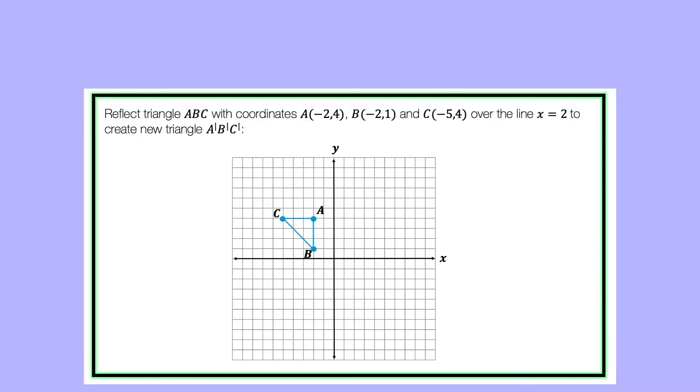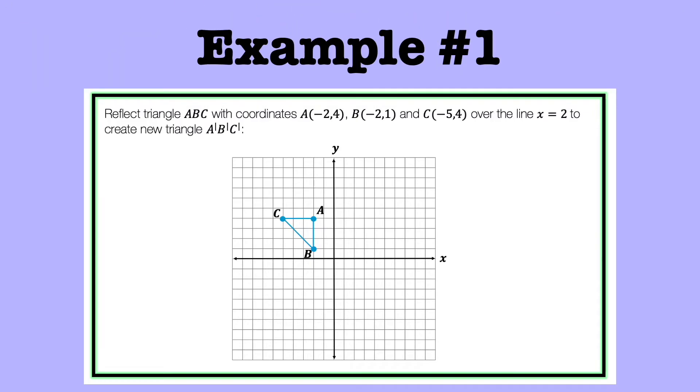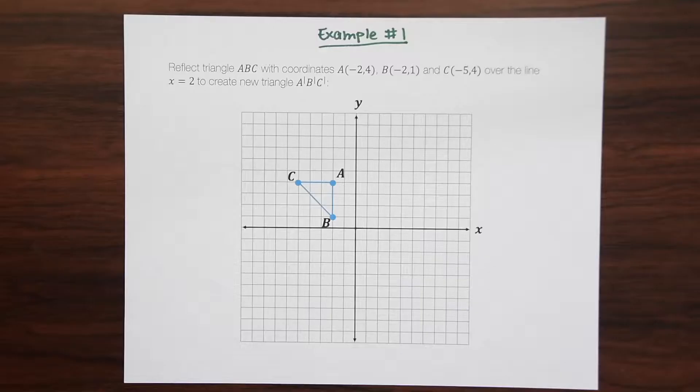So now we'll just go into our first example. So we need to reflect triangle ABC with coordinates A negative 2, 4, B negative 2, 1, and C negative 5, 4, over the line x equals 2 to create a new triangle A prime, B prime, C prime. So what we're going to do is just first draw out that line x equals 2.